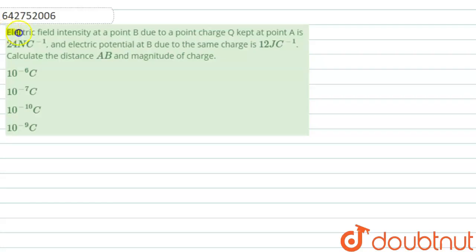Student, the question is: electric field intensity at a point B due to a point charge Q at point A is 24 Newton per coulomb and electric potential at B due to the same charge is 12 joule per coulomb. Calculate the distance AB and the magnitude of charge.